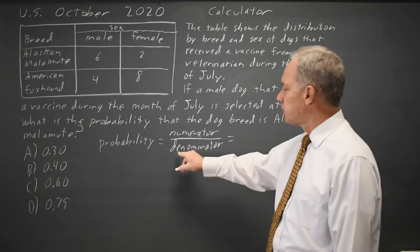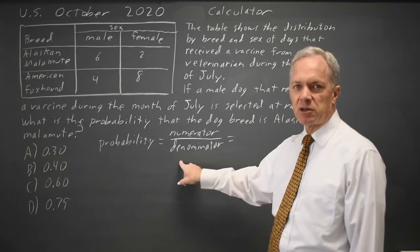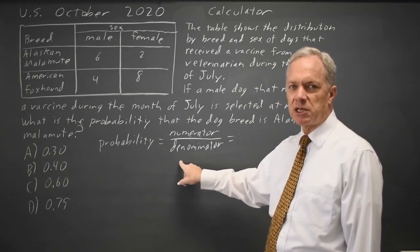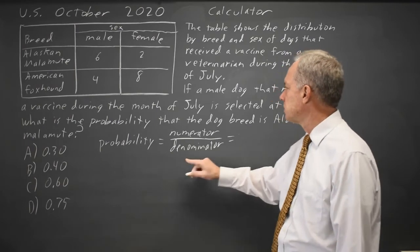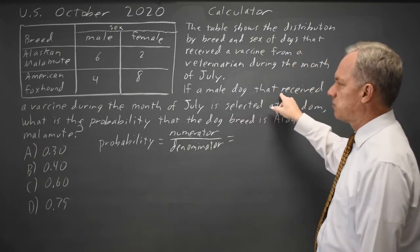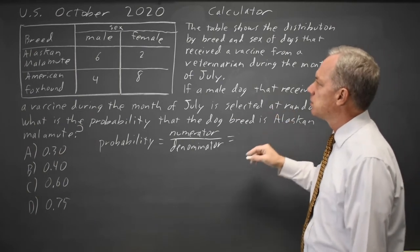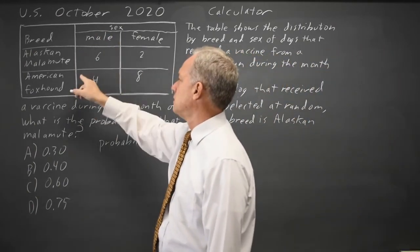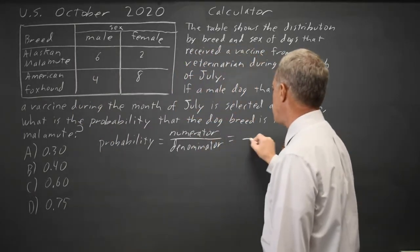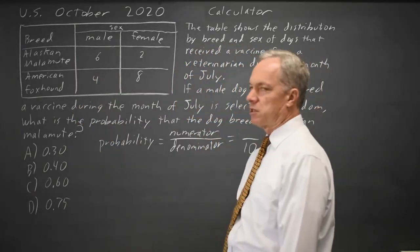I always find the denominator first. The denominator is all individuals that we might have chosen as described in the question. They say if a male dog that received the vaccine during the month of July is selected at random. So all the male dogs would be this column for males. That would be 6 plus 4 is 10 male dogs, and that's our denominator.